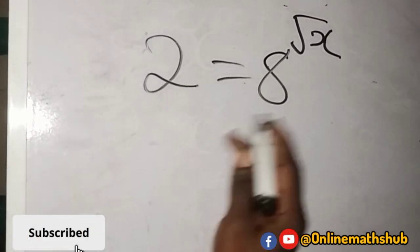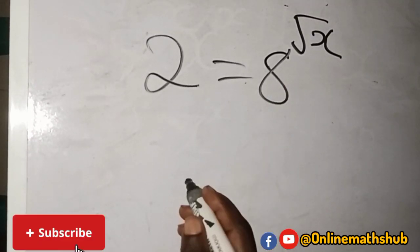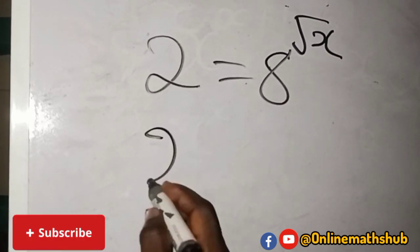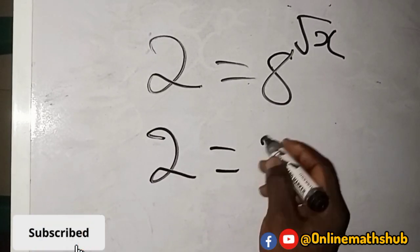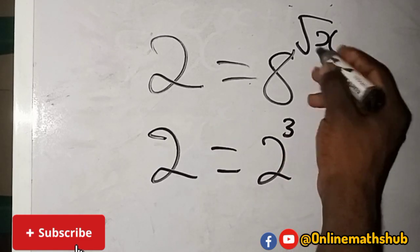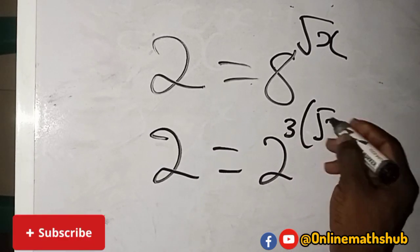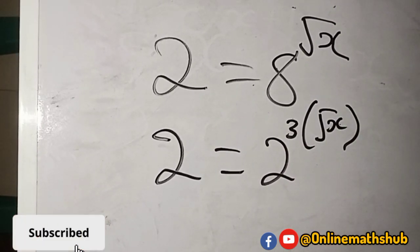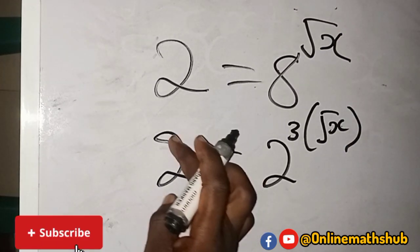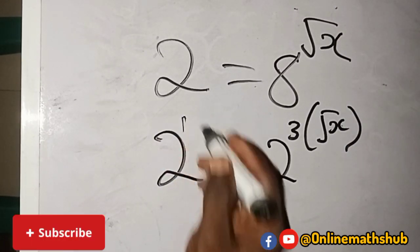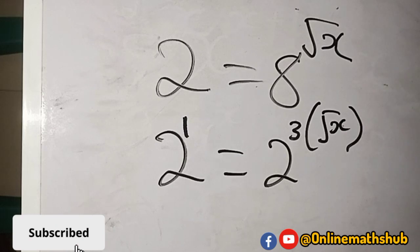To solve this problem, I'm going to write 8 as 2 raised to power 3. So I have that 2 is equal to 2 raised to power 3, and the 3 is actually going to multiply the square root of x.